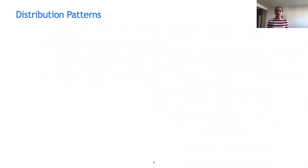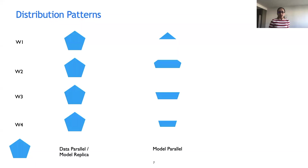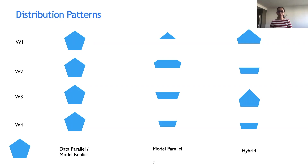In the distributed setting, this computation DAG can be distributed in multiple ways across multiple workers. The first mode is called data parallel or model replica mode, where the entire DAG is available at all workers. The second mode is model parallel mode, where the input DAG is divided across multiple workers. Finally, we have the hybrid mode, which is a combination of data parallel and model parallel modes. In this talk, we'll be focusing on the data parallel mode, which is one of the most popular modes of distribution, where every worker has a complete copy of the DAG.